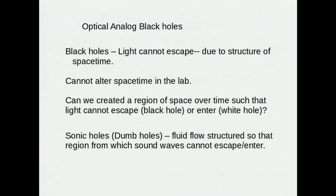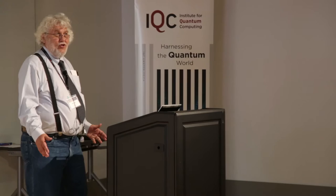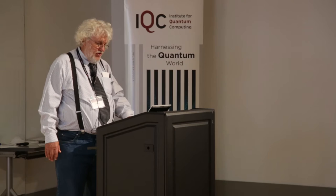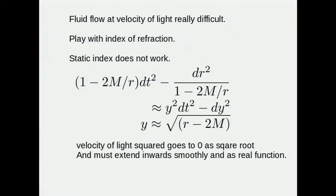Sonic dumb holes are places where we structure the flow of the fluid in such a way that in some places the fluid was flowing faster than the speed of sound and other places slower than the speed of sound. Of course with light that's really hard to do to make a fluid flow at close to the velocity of light even if the velocity of light in the material is slower than the velocity of light in free space. So one of the things we could try to do is to just build a Schwarzschild black hole. The trouble is that the index refraction has to behave in a way that one just can't make it do that.